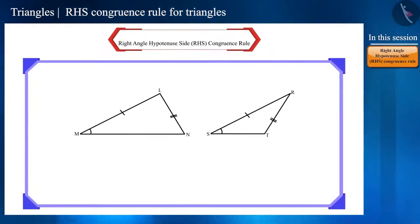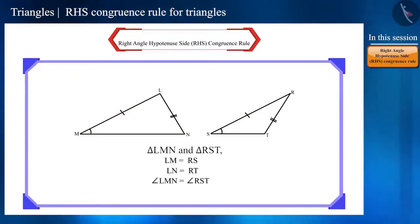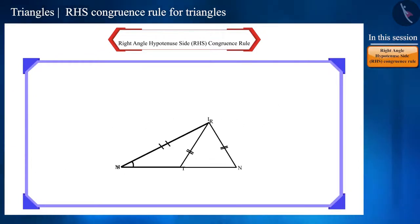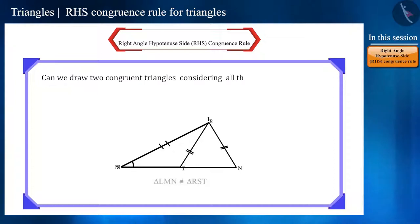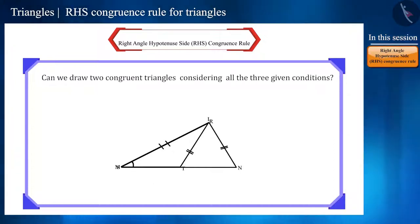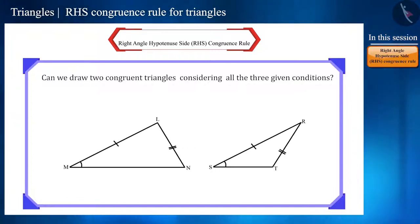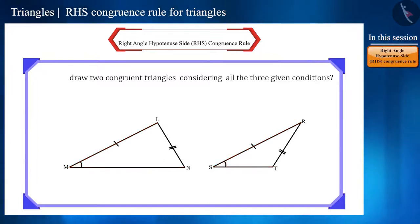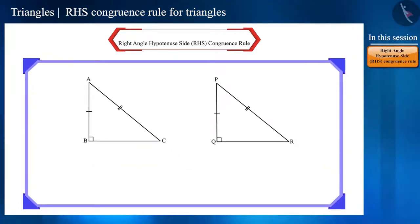To understand the RHS congruence rule, we will start with a pair of triangles where two sides and one angle are equal, but these two triangles are not congruent. We can verify this by placing the two triangles one on top of the other. Can we draw two congruent triangles considering all three given conditions, where two sides are equal and one angle not within these two sides is also equal?